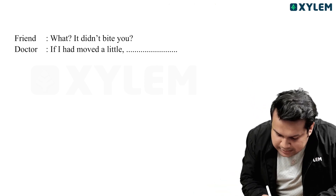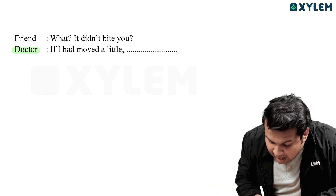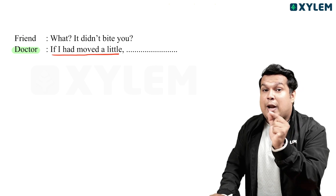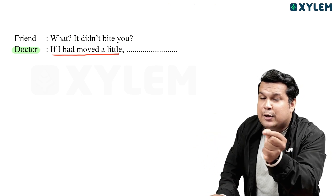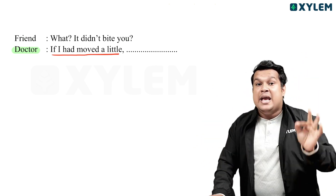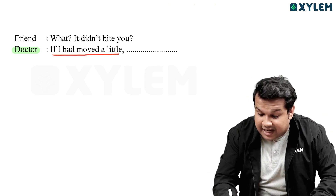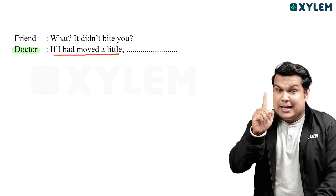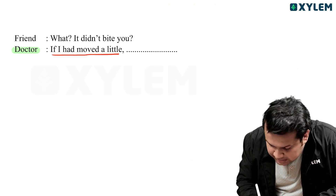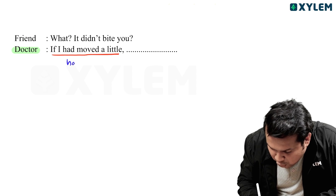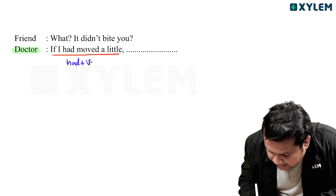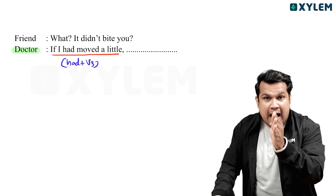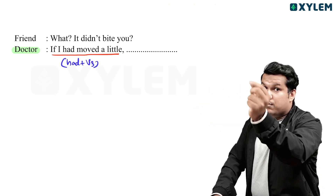Then the doctor said, 'If I had moved a little...' — this is an if-clause example. 'If I had moved' — that's had plus V3. Had plus move gives us 'moved.' This is the structure we need to learn.